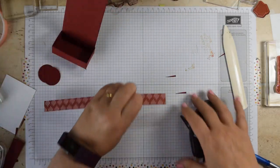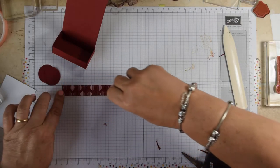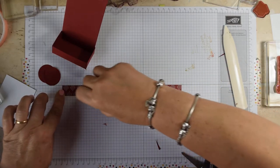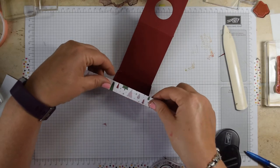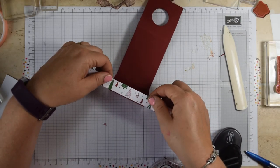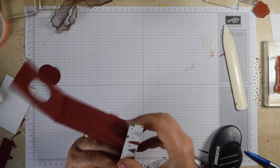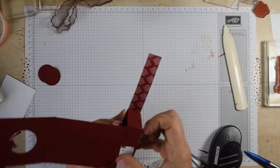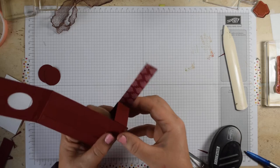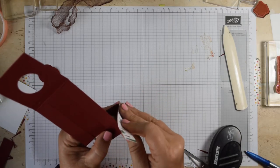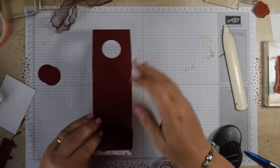Then take our strip of DSP and then just come in with some snail or whatever adhesive you prefer. And then literally just by eye, just center that onto the card. You don't have to worry about scoring. You can literally just fold it round and crease it as you go around. So that's our holder.